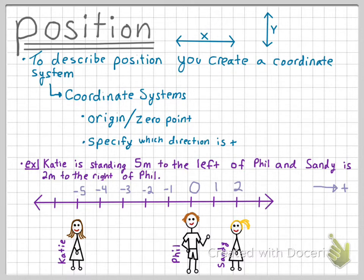Let's try another coordinate system where no one is positioned at the zero point. Let's position Katie at the point negative 15. This means that Phil will be placed at the point negative 10, and Sandy at negative 8. Hopefully that makes a little bit more sense now.